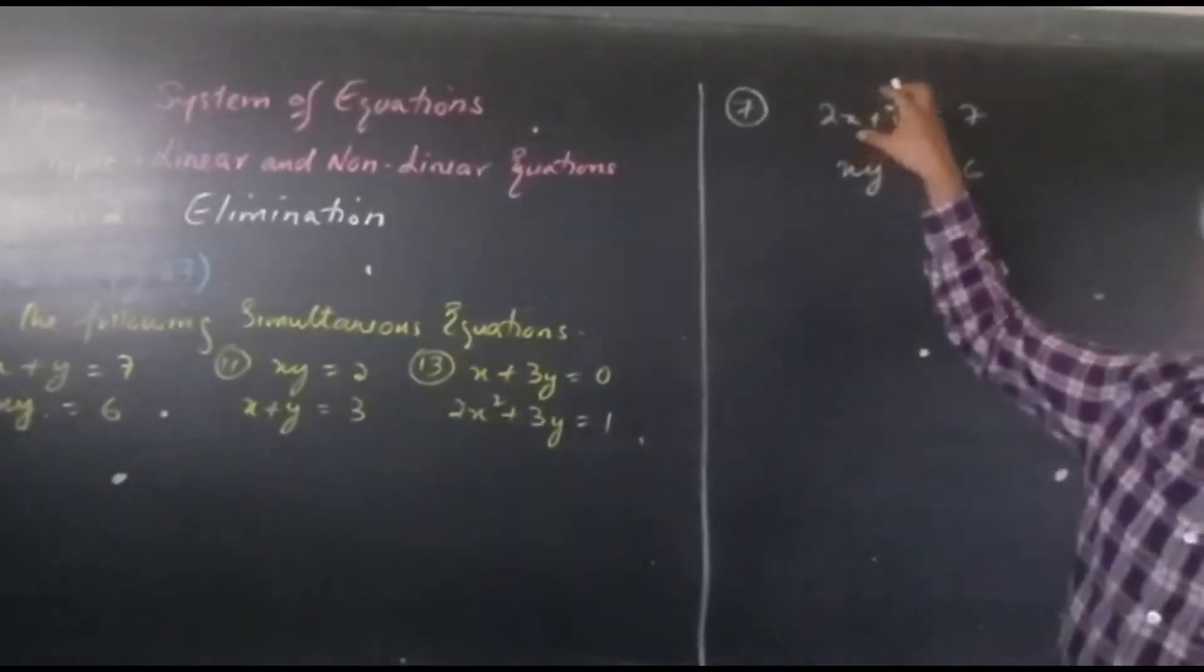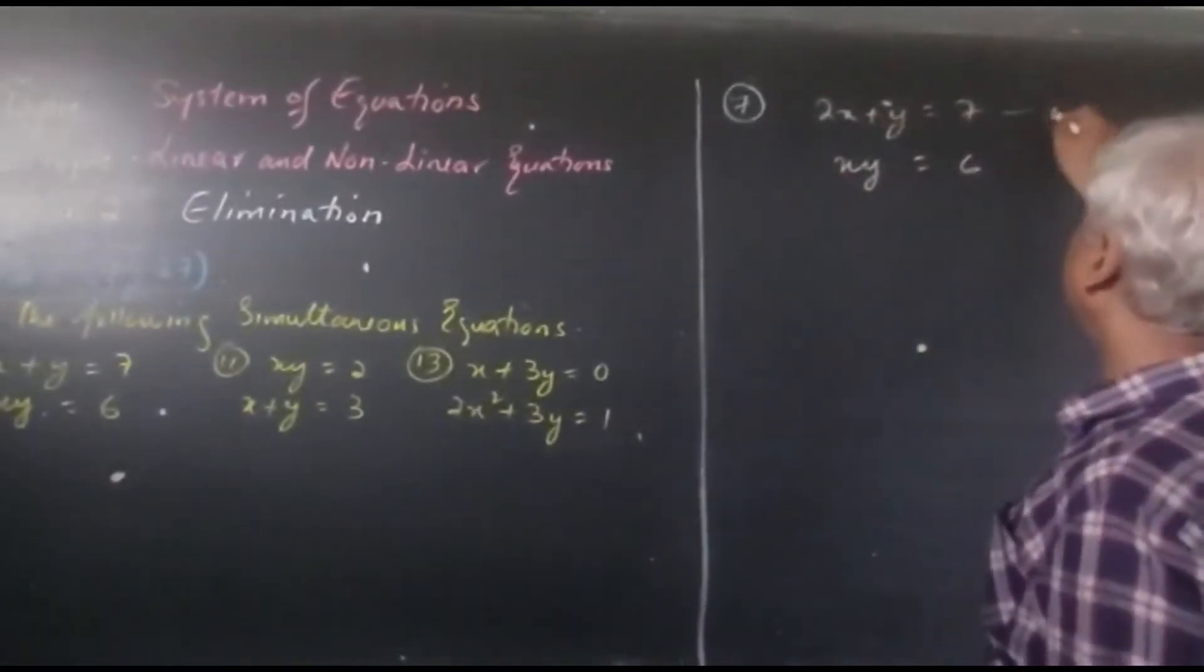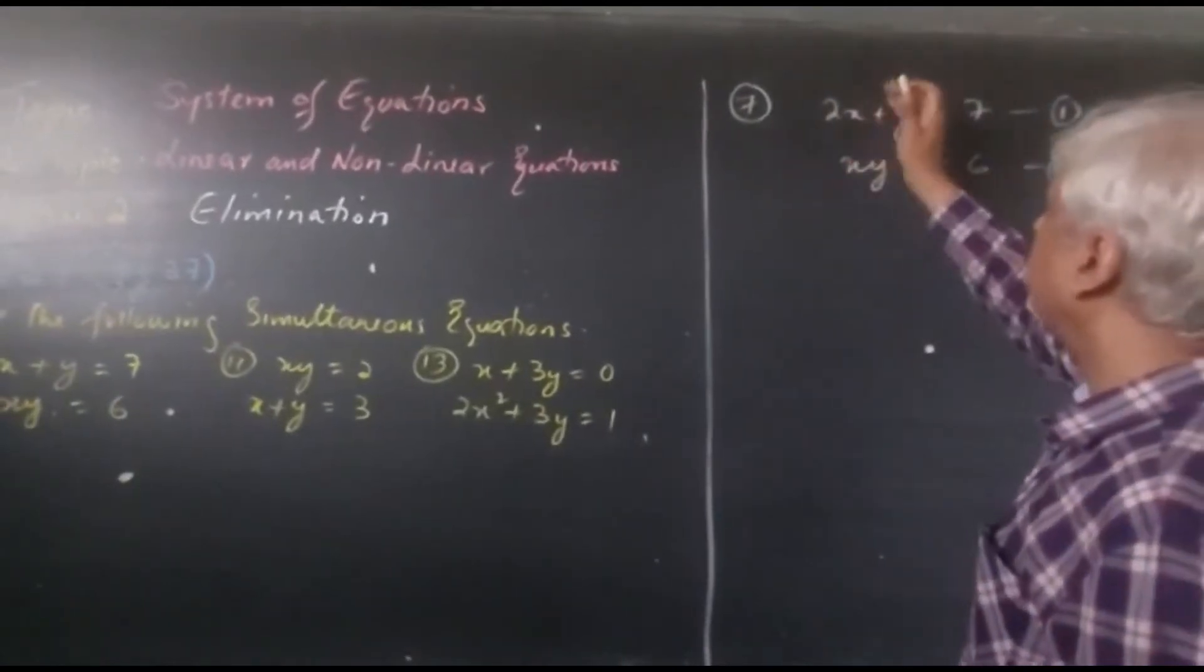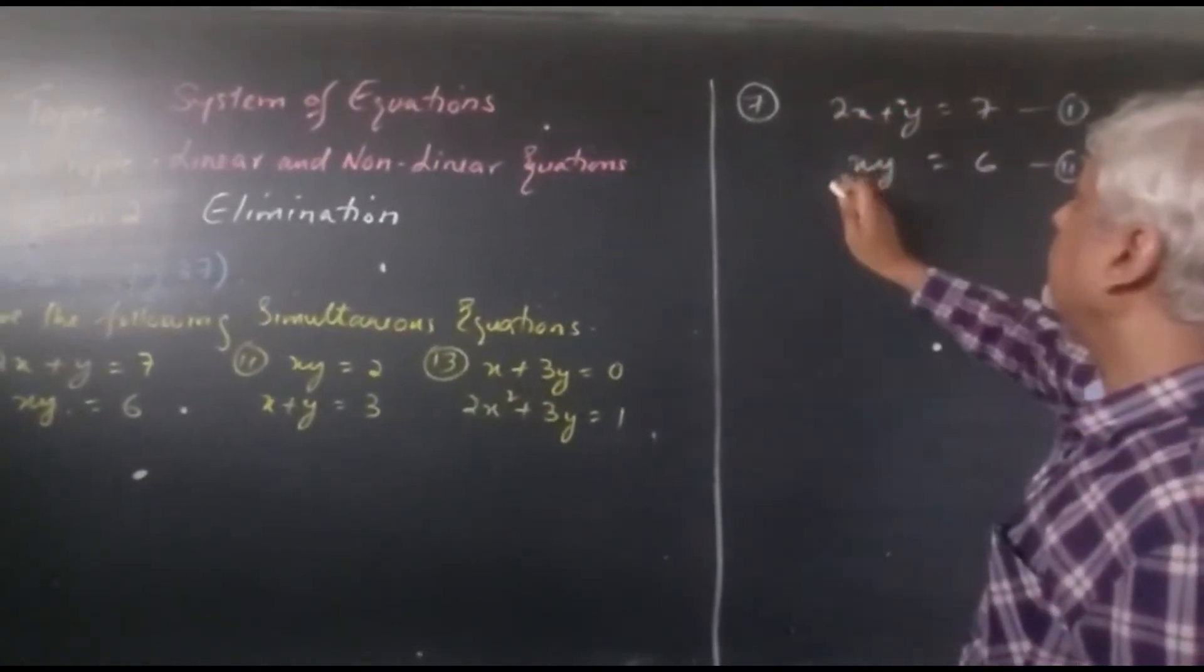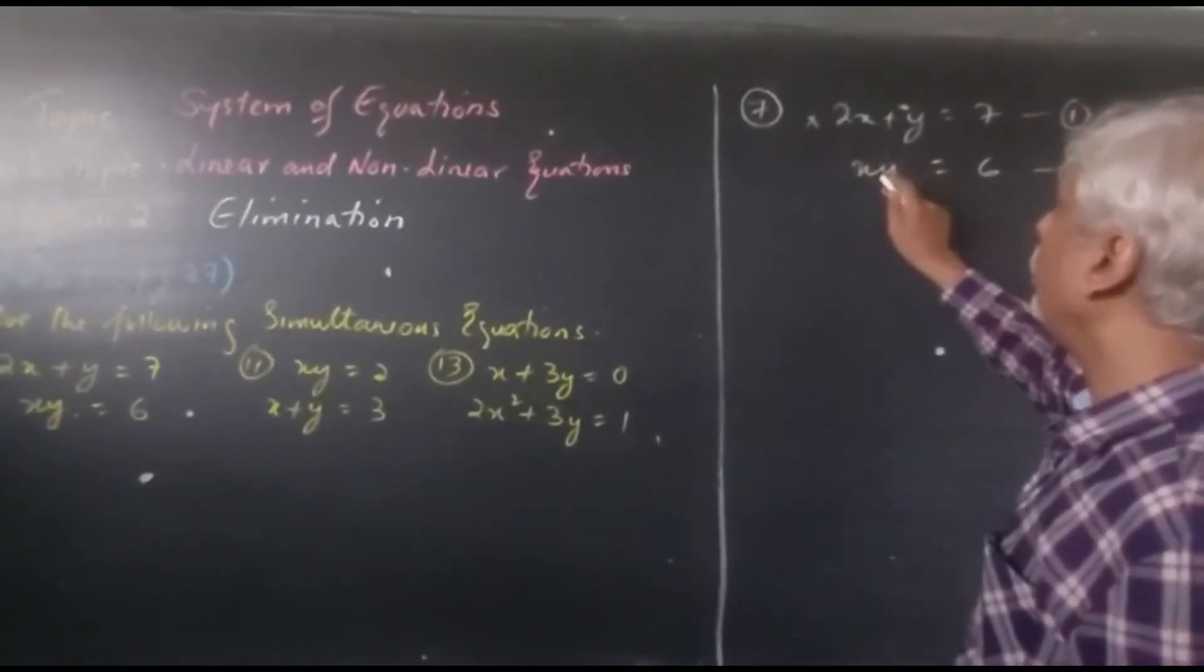Now we have to eliminate either x or y. We do it in the very first step. Let's call this equation 1 and this equation 2. So I can eliminate x over here by multiplying this with a coefficient that is 1.